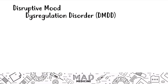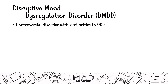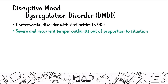We have disruptive mood dysregulation disorder, or DMDD. This is a controversial disorder because it has similarities to oppositional defiant disorder. In this disorder, a child is going to have severe and recurrent temper outbursts that are out of proportion to a situation — and that's the key giveaway. If they start screaming and yelling when you tell them no, you can't have ice cream, and they throw a crazy temper tantrum, you're probably looking at a kid who has DMDD instead of ODD. They're not arguing simply because you're the authority figure — they're just going crazy over something that doesn't really make sense to you.